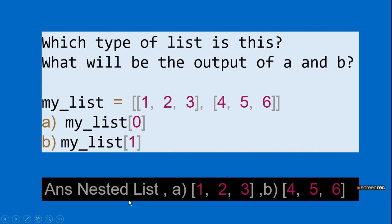The list is a nested list. The answer for A is [1, 2, 3] and B is [4, 5, 6] because it is a nested list — there are two lists inside one outer list.